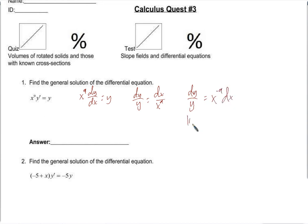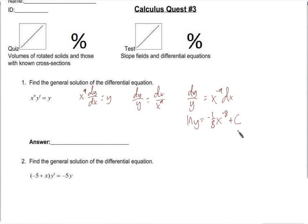Taking the antiderivative, the natural log of y equals... we need to subtract 1. If this is a function and we take its derivative and we get negative 9, then we must have started with a negative 8 exponent. To cancel that out we put a negative 1/8th, so we wind up with x to the negative 9, plus c.